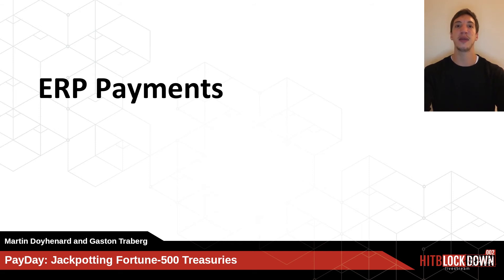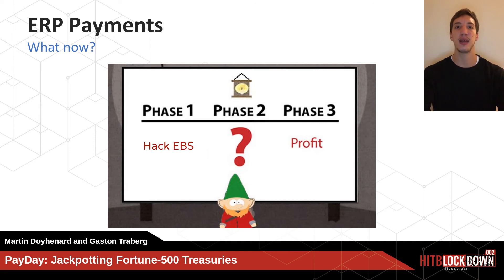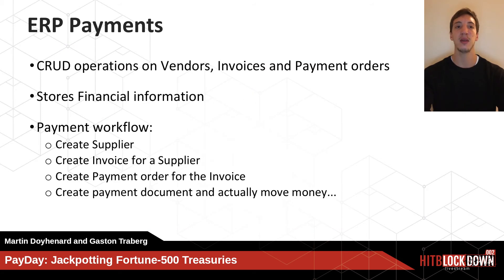Using these vulnerabilities, an unauthenticated attacker can obtain full control of Oracle eBusiness Suite applications as well as the Oracle EBS database. But the question now is: if phase 1 is hacking EBS and phase 3 is obtaining profit, what is phase 2? How can an attacker who controls an ERP make real profit? To understand this, we'll present the ERP payment modules.